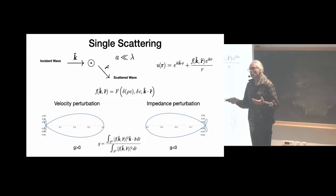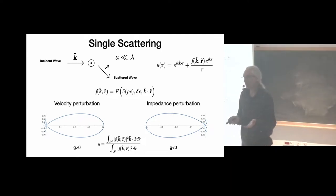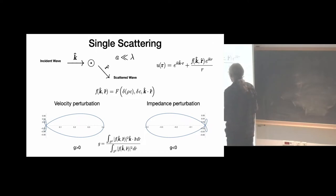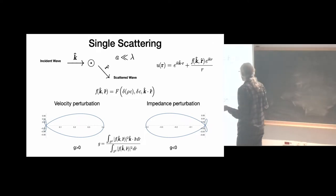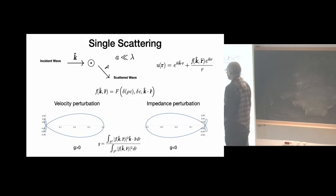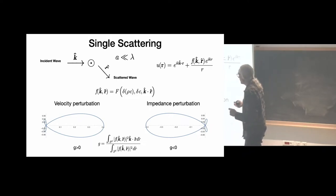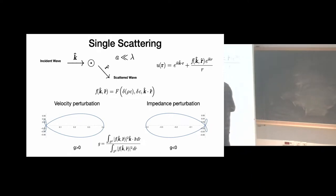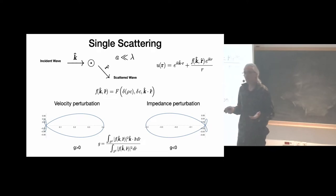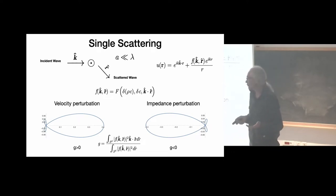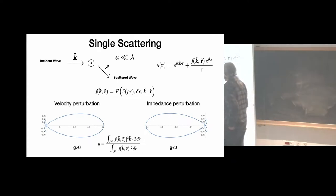This is already interesting: if you are able to access the scattering pattern, you can start to have an idea of the type of fluctuations occurring in the medium. In the Earth, small objects generally produce a large lobe of backward scattering with possibly a more complicated pattern, obtained by a linear combination of impedance and velocity perturbations — valid only when the perturbations are weak enough.